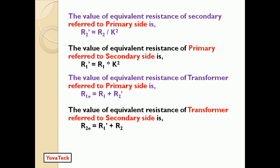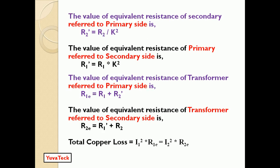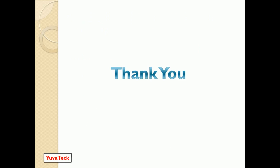The same kind of formula can be used to find out the reactance value as well as the impedance value — in place of R we can write X or Z. So these four formulas can be used to find out the equivalent values of reactance and impedances as well. You can verify the answer finally: if you substitute I1² × R1E as well as I2² × R2E, both will give the same value — that is, while calculating the total copper loss of the transformer, any one of these formulas can be used.